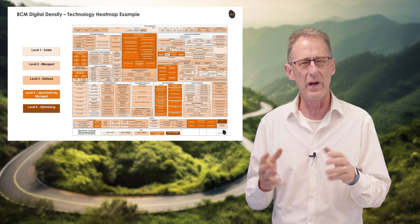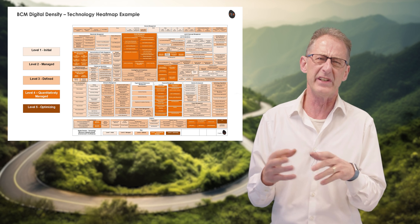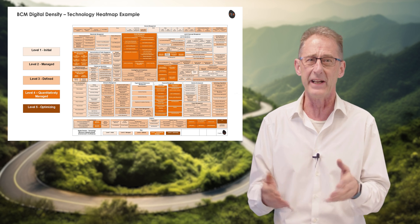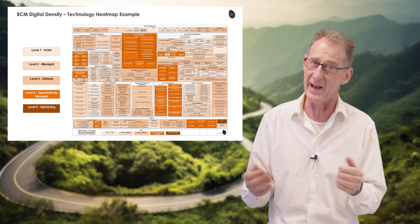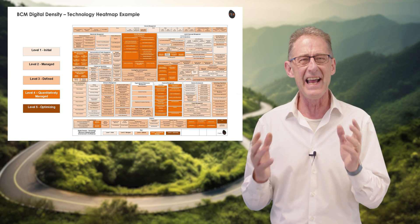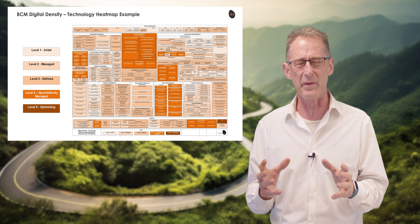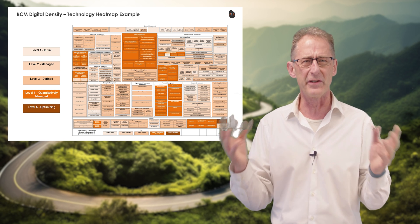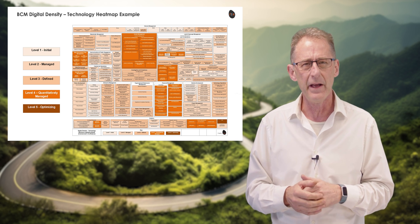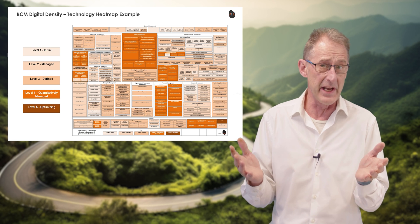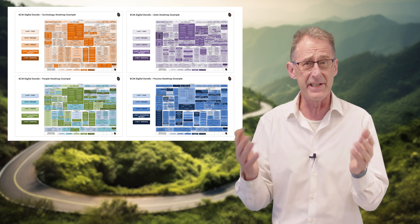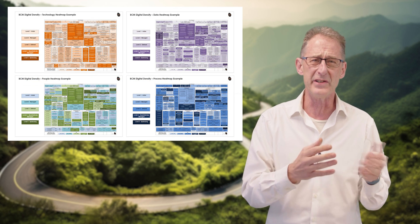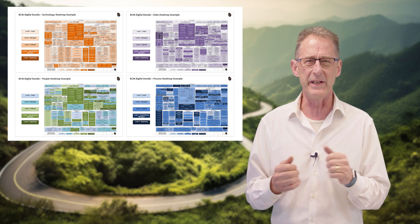Finally, while an assessment of the current state of technology is naturally critically important when developing a technology roadmap, any holistic transformational roadmap for an organisation needs to consider the other facets of a capability. Any business capability covers the people, process, data, and technology that's required to deliver the services of that capability.